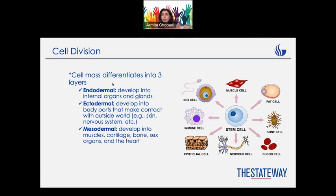So I guess the name kind of speaks for itself. Endo means inside, ecto means outside, and meso is just something in between. Here you can see a better picture of how stem cells are going to develop. You can have more examples in the book, so check them out because there are definitely going to be quiz questions and exam questions based on that, because this is so important.